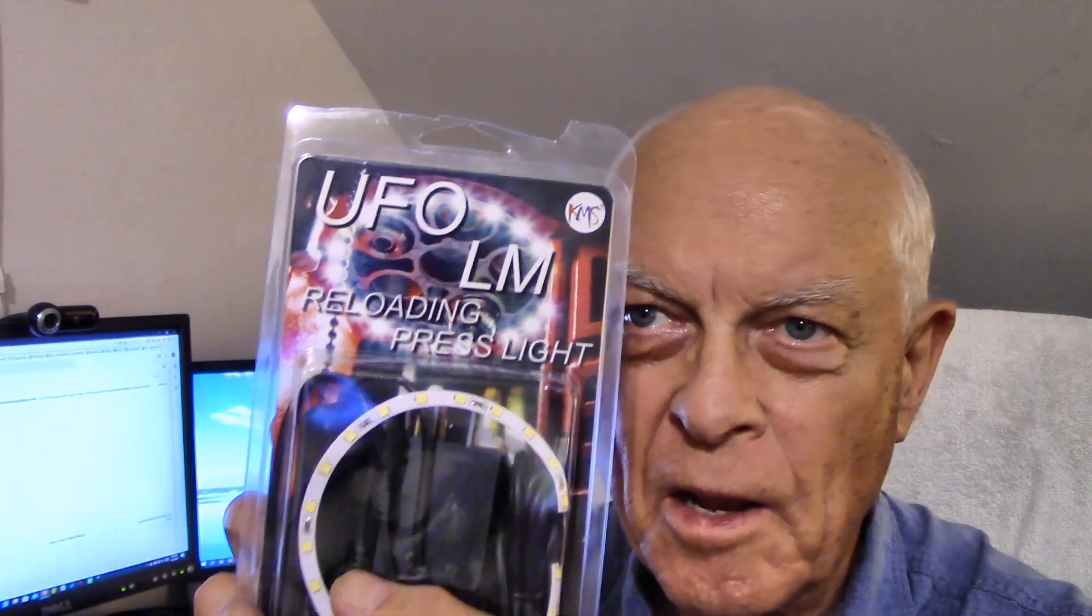What we're going to do today is take this UFO LED light and install it on my Lee Loadmaster reloading press. I didn't get this for free—I bought it. Cost me all together $35 off Amazon, and it wasn't a two-day delivery because it was from somebody else, so I had to wait a week.